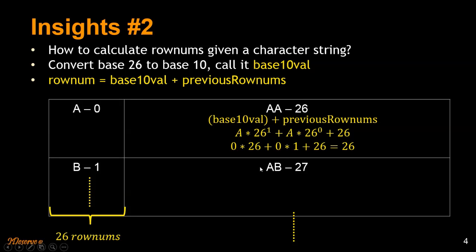Let's try to do that for AB. Let's calculate the base 10 value. A into 26 power 1 because it's at the 10th place plus B into 26 power 0 plus the previous row numbers, the number of row numbers here for single letter. So that will be 0 into 26 plus 1 into 1 plus 26.